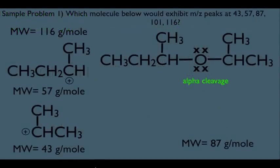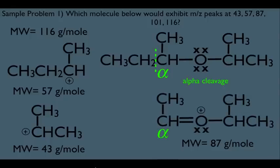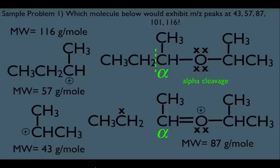Applying this to S-butyl isopropyl ether: locate the alpha carbon on the left side of oxygen, make the cut. On the right-hand side, the alpha carbon is doubly bonded to oxygen — that fragment weighs 87. On the left-hand side, we get a radical. Note: cleaving the methyl instead would leave a primary radical, whereas this cleavage gives a more stable primary radical from the longer chain — so this alpha cleavage is favored.